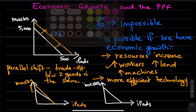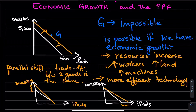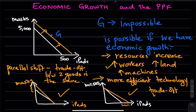Similarly, if we have a technology that makes us better at producing iPads, we might see a shift where we are producing more iPads but not much is happening to mask production. So there's a disproportionate increase in either output depending upon which type of technology is improving.